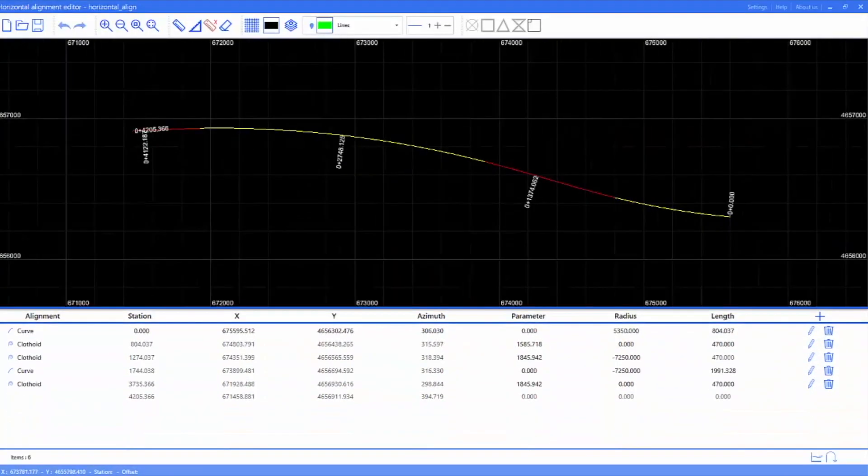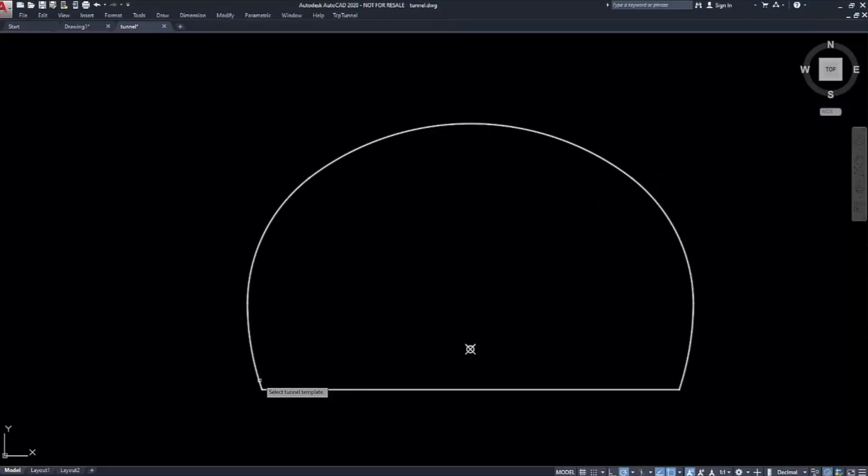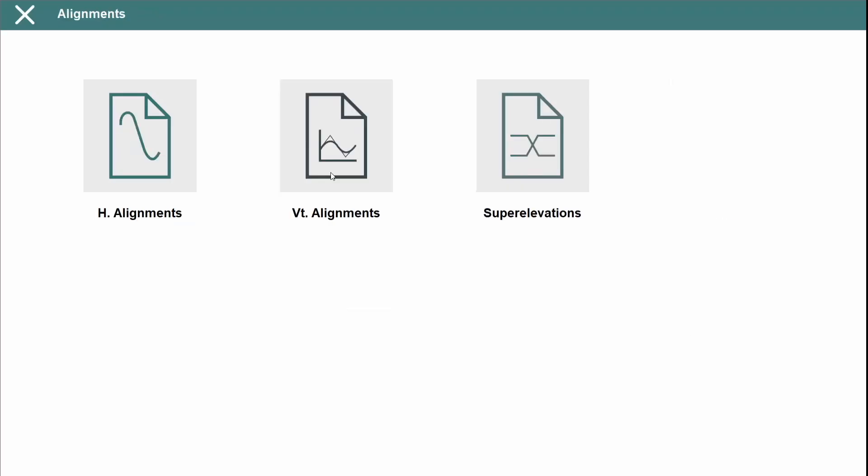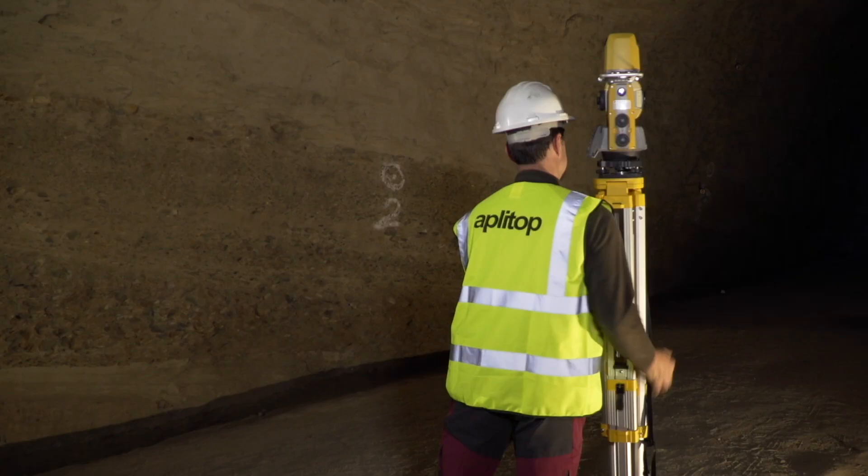Each project is defined by the horizontal and vertical alignments, the tunnel design and cloud points. Data can be extracted from CAD drawings or imported from land XML, IFC and other formats.